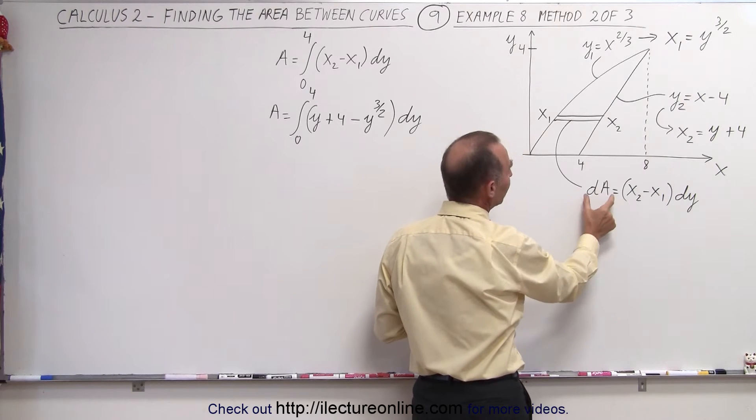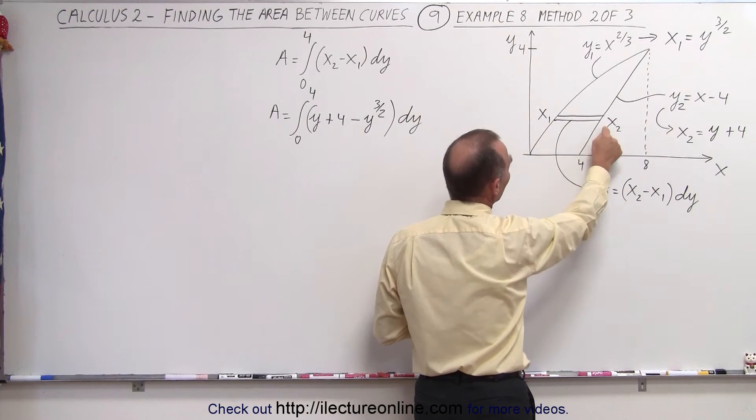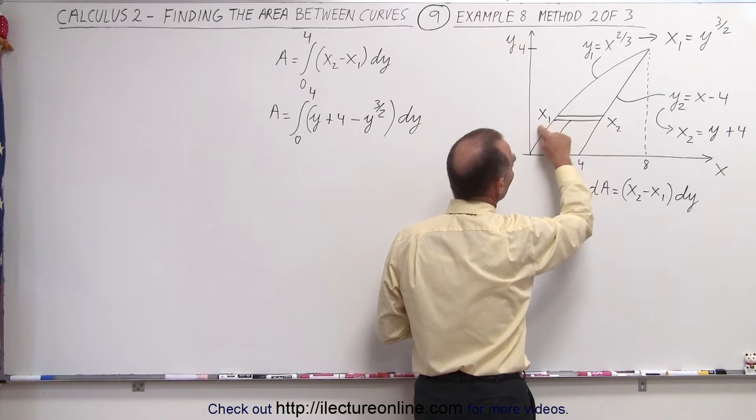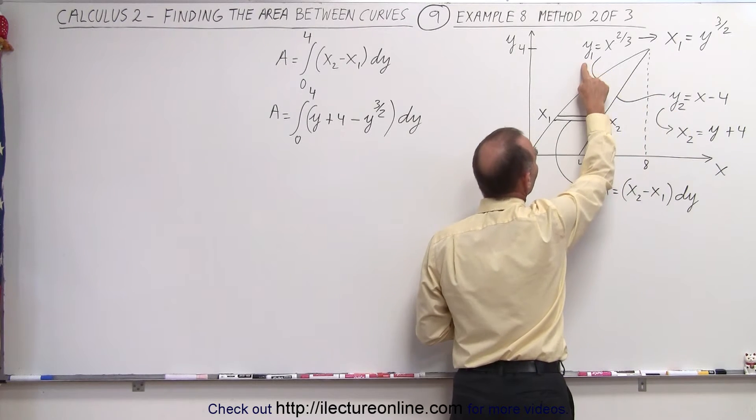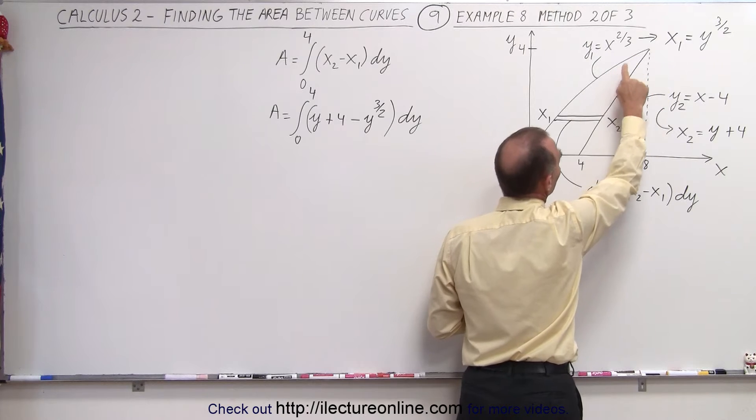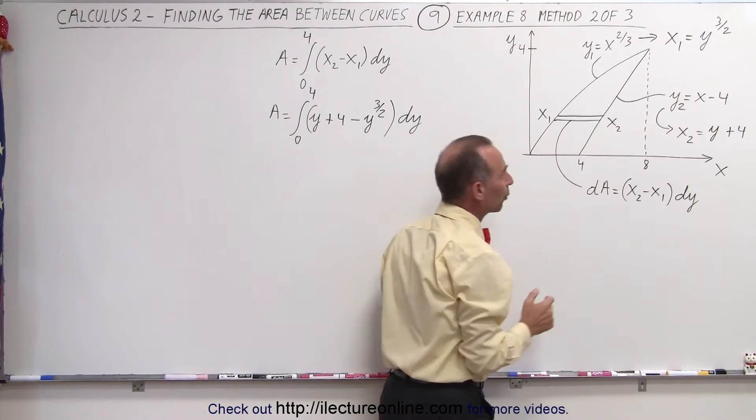But then you see that the dA is going to be equal to the difference in the x values between these two curves, which means we have to take the two functions which are y in terms of x and turn them into x in terms of y equations.